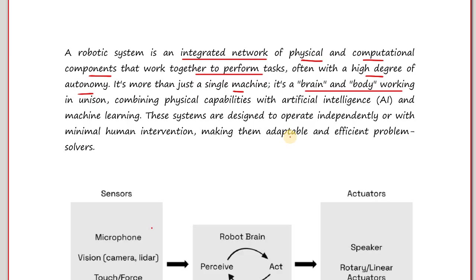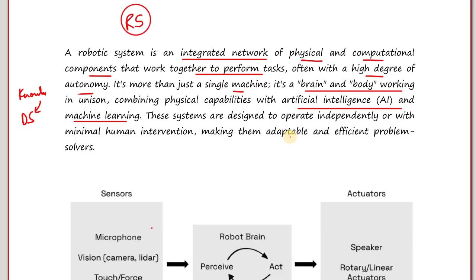The brain is basically artificial intelligence and machine learning, along with the knowledge — which is your data science. These robotic systems are designed to operate independently or with minimal human intervention. I will use RS for robotic systems in short.